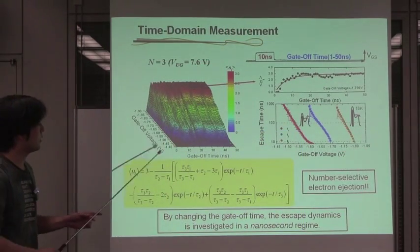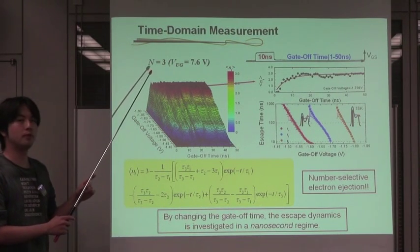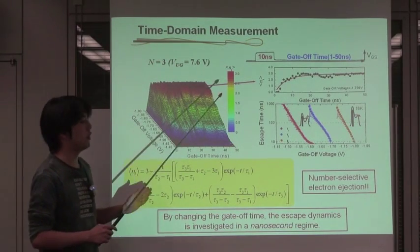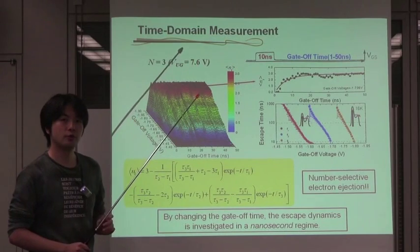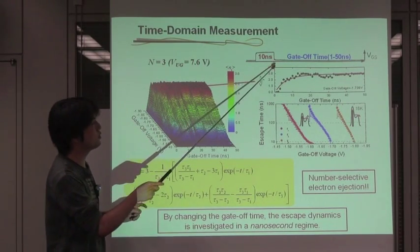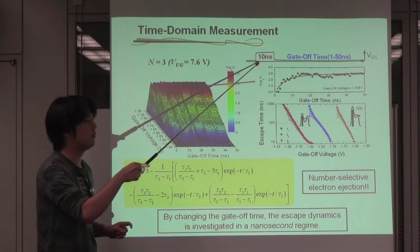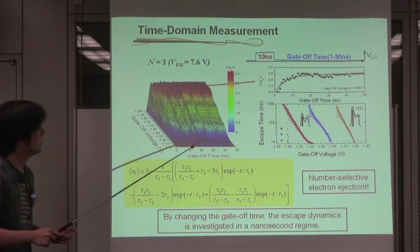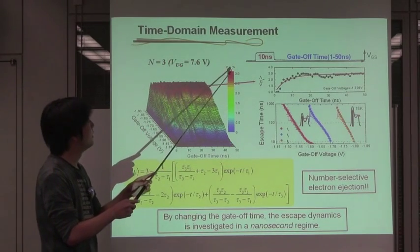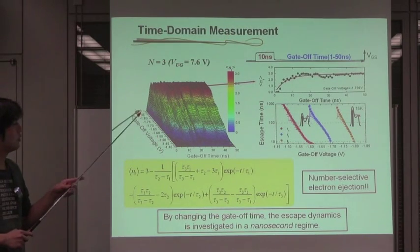Here is the analytical result obtained when three electrons are prepared initially in the quantum dot. In this work, the escape dynamics was investigated by changing the gate-off voltage in a nanosecond regime. We fixed the gate-off time at 10 nanoseconds. This figure shows the time-resolved result of the average number of the ejected electrons at different gate-off voltages.